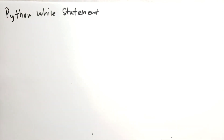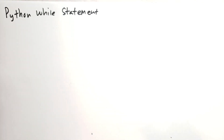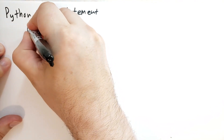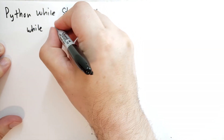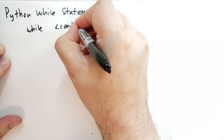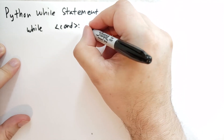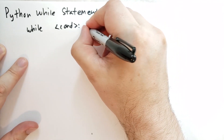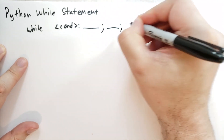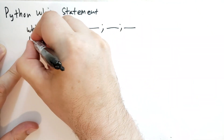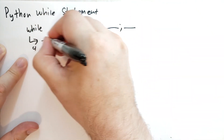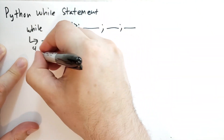The while statement is used for iterating, or rather looping, over the same statements over and over again. If you want to iterate over a sequence, you should use the for statement, and we'll cover that in a later lecture. The while statement looks like the following: 'while' and then some expression that's a condition, and then you either have statements following this on the same line separated by semicolons, or you indent by four spaces and have a block of statements stacked on top of each other.